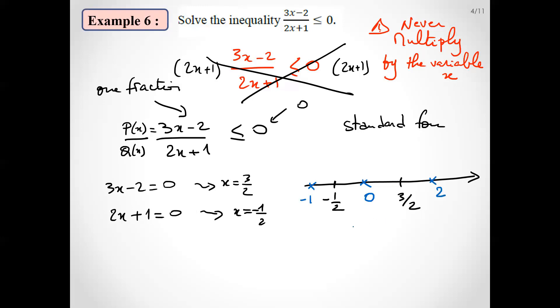Make your sign chart. For x equals zero, replacing in this expression, P(0)/Q(0) equals minus 2 over 1, so it's negative. We put minus. For x equals 2, we calculate P(2)/Q(2), which is 4 over 5, positive.